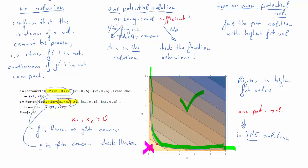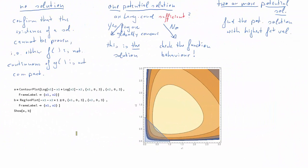Let's look at a last example. The function is log(x1) minus x1 plus log(x2) minus x2, and the constraint is the linear constraint negative x1 minus x2 plus 1 greater than or equal to zero. This defines a small triangular area of allowed values. The unconstrained maximum would lie outside the allowed area, so the constraint isn't fulfilled there. We will not find a potential solution with lambda equal to zero.